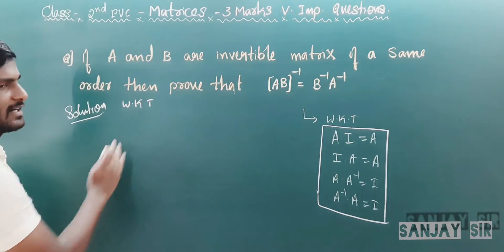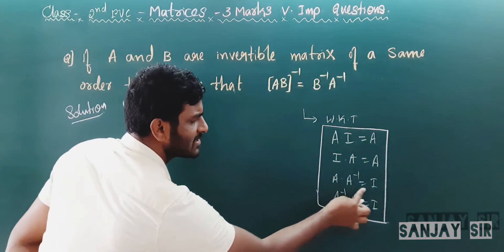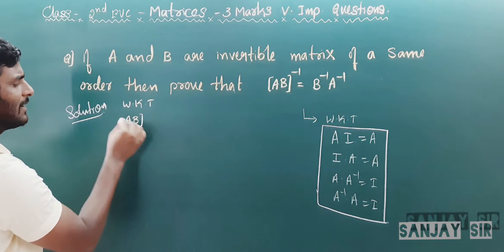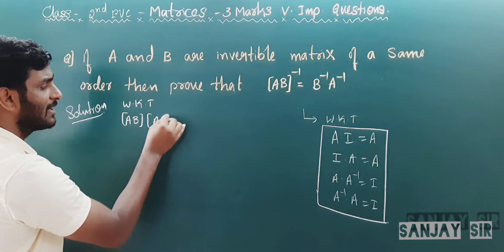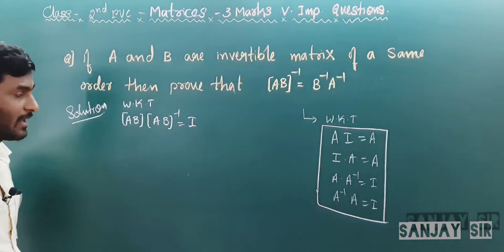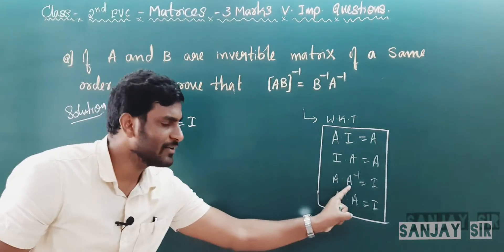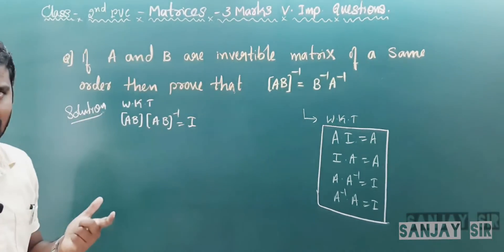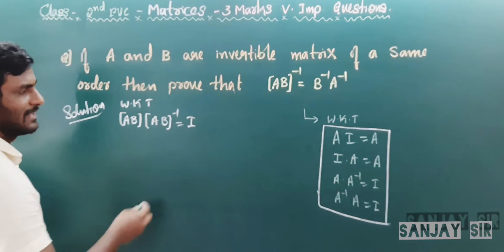We know that A · A⁻¹ = I. Let us consider AB · (AB)⁻¹ = I. Here AB · (AB)⁻¹ = I, and A · A⁻¹ = I, so AB · (AB)⁻¹ is also I. First step, we have to pre-multiply.